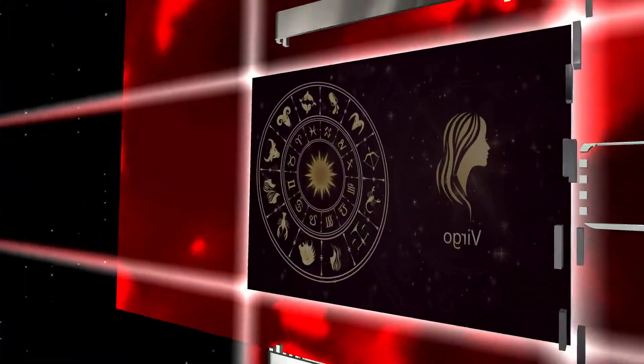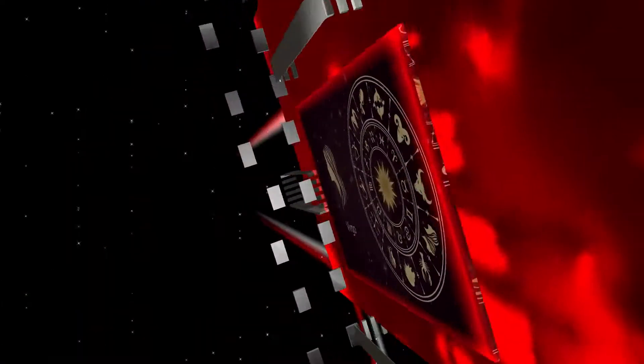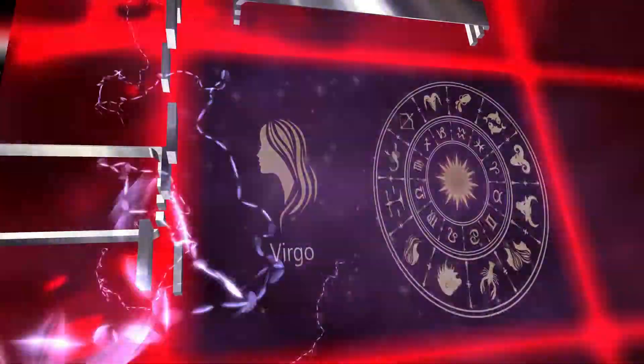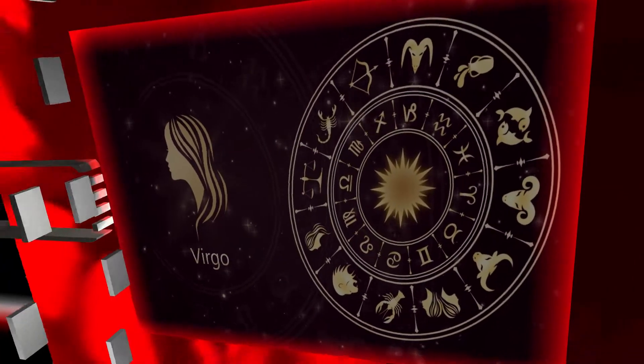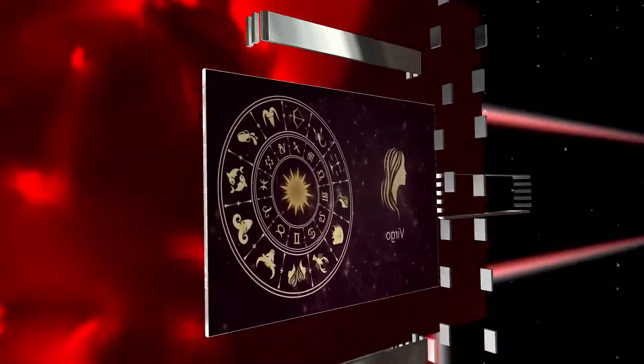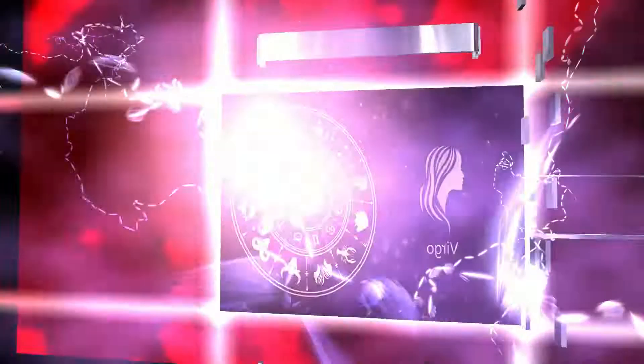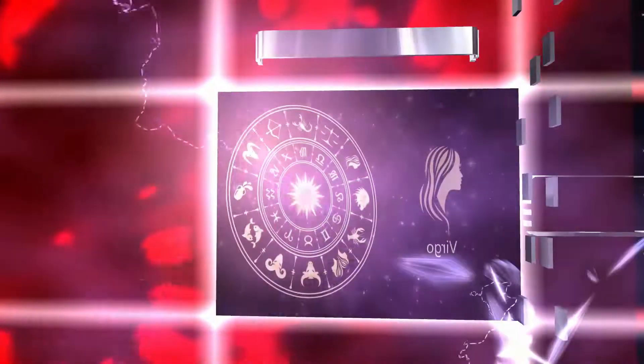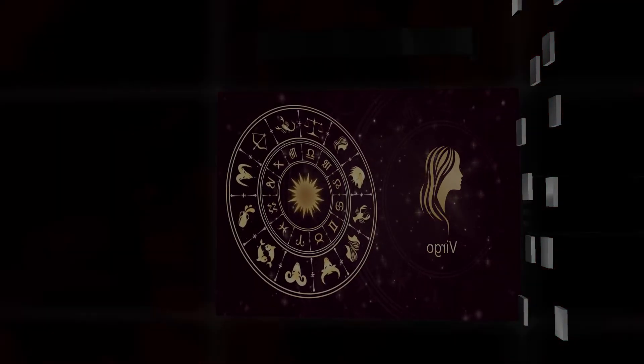Virgo, today's new moon in Sagittarius can find you enjoying a fresh start at home. You could be moving or simply connecting with your past, your family, or your loved ones in a new way. Jupiter ends its retrograde in Pisces, bringing an uplifting, exciting mood in your relationships.